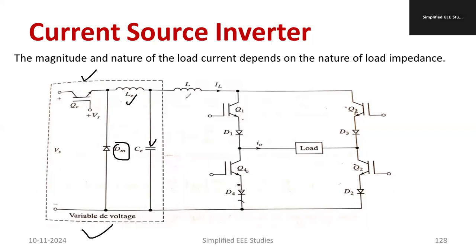There is a series inductor which will reduce the fluctuation of the current. Then we have main switching devices Q1, Q2, Q3, Q4. Then load will be connected over there. This is the basic circuit diagram of current source inverter.